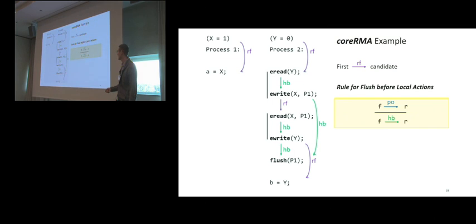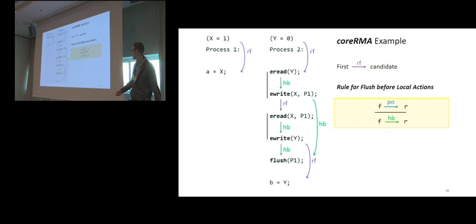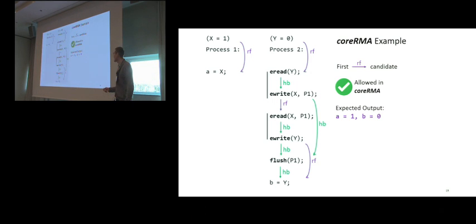Notice that this happens before rules and the previous one as well do not depend on the read from relations. So this happens before relation will hold for other read from relations as well. This rule adds additional two happens before rules. And finally, we have a simple rule that says that any flush that happens in program order before a local read is also ordered with happens before. Similarly, if we continue applying coreRMA rules for this specific read from relation, we will see that the resulting happens before is acyclic. Therefore, this read from relation is accepted by coreRMA, and this leads to the expected output A is 1 and B is 0.